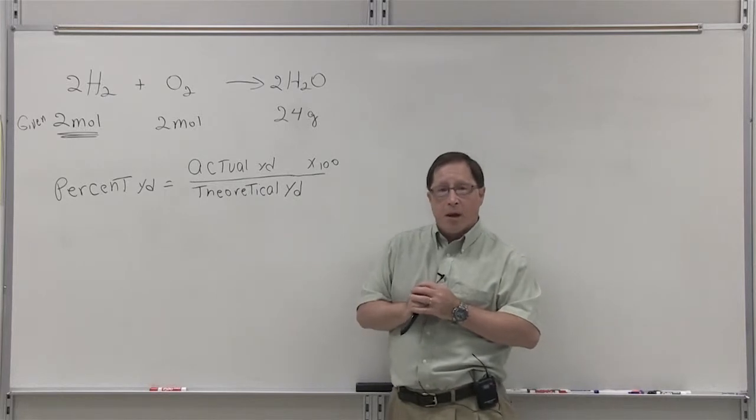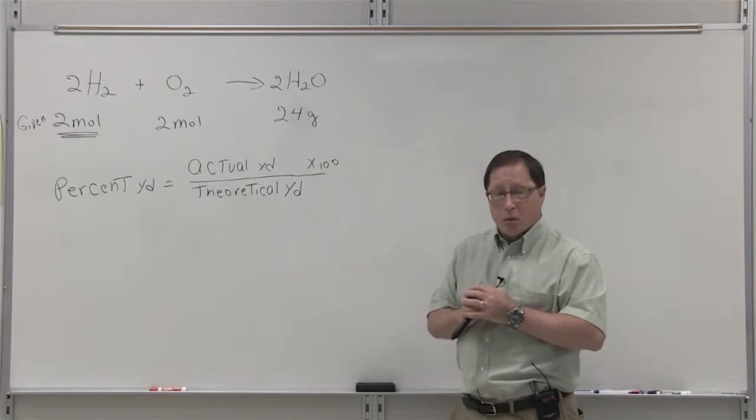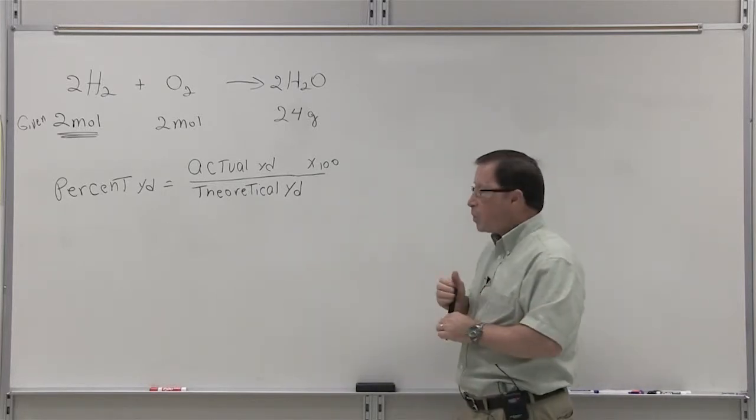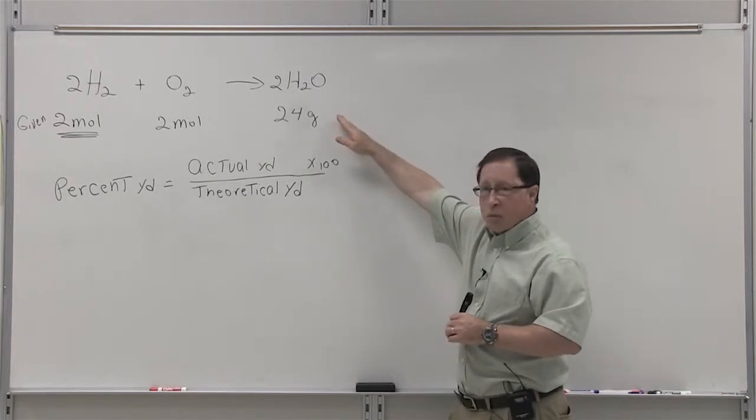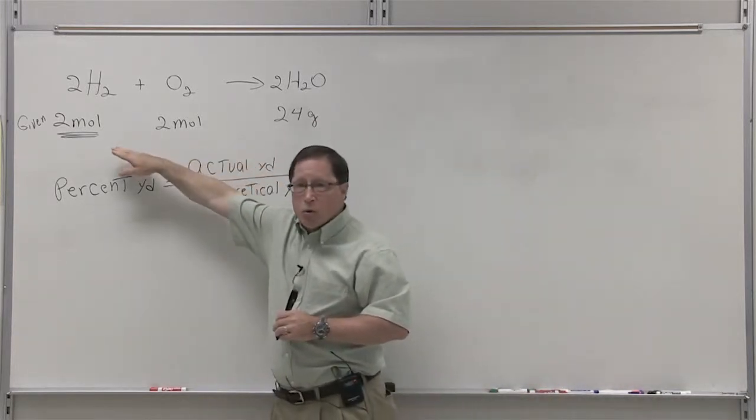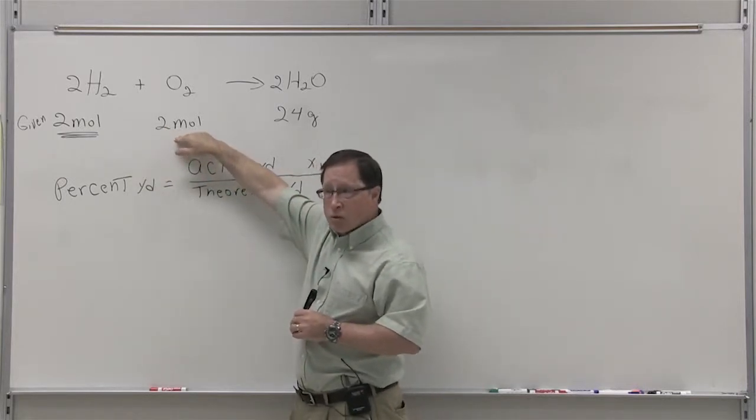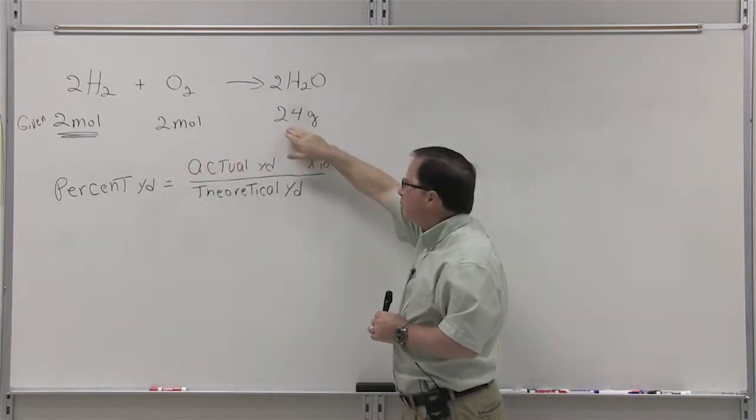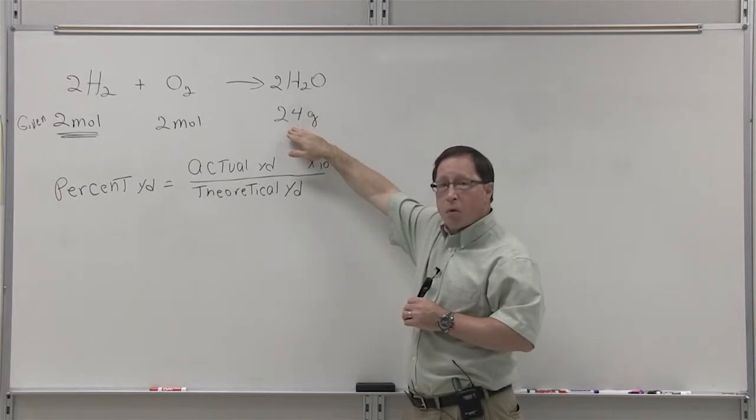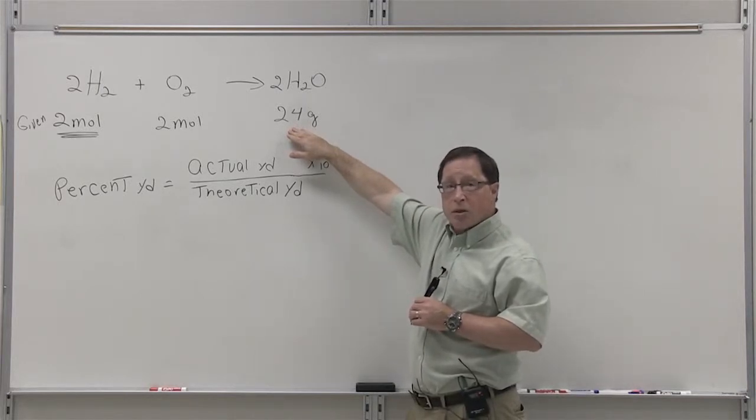So let's talk about how we calculate a percent yield from a reaction. If we look at this reaction where we began with two moles of hydrogen and two moles of oxygen, and our yield in this reaction was 24 grams, that's what we actually got out of it.